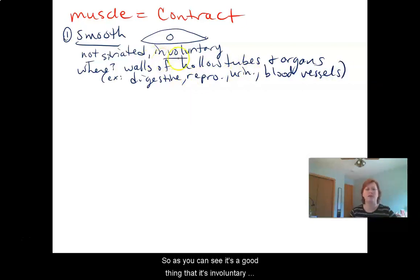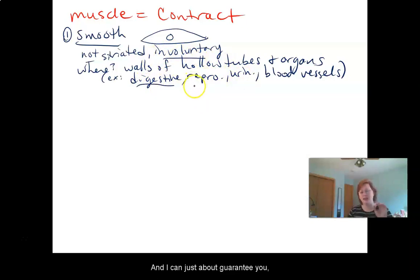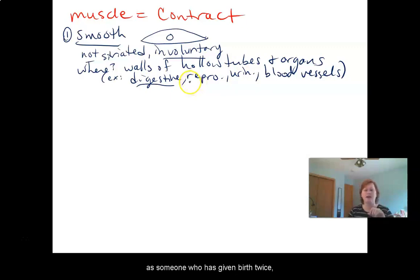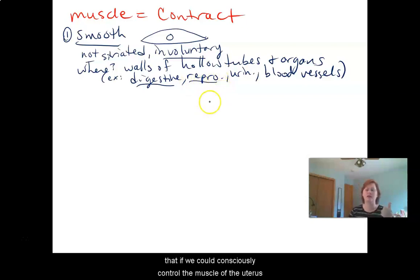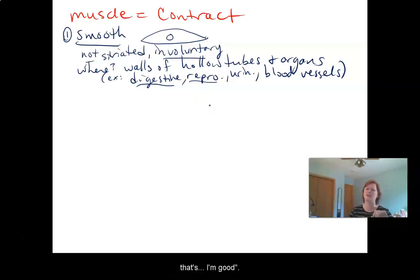It's a good thing that it's involuntary because you don't want to have to stop and think about moving food through the digestive tract at every step. And as someone who has given birth twice, if we could consciously control the muscle of the uterus, it would be a whole lot harder to give birth — because at a certain point of contraction our brains would say, 'Yeah, no, I'm done.' So it's good that that's an involuntary function.